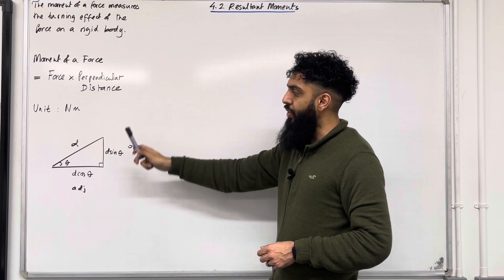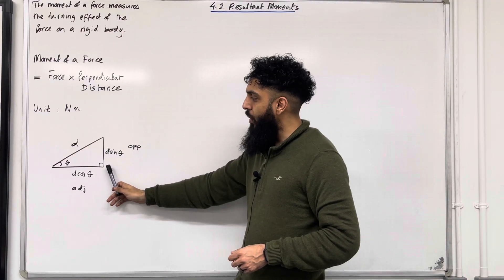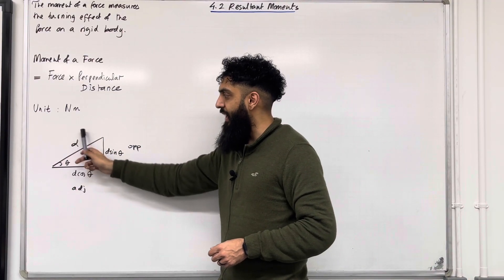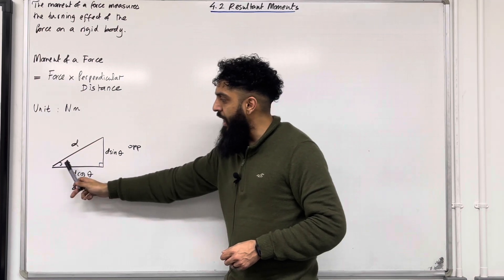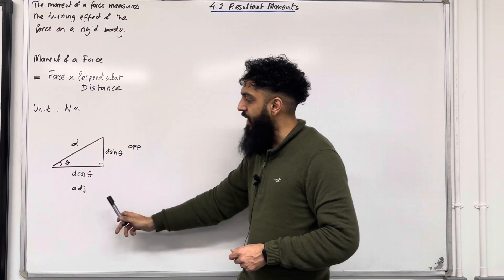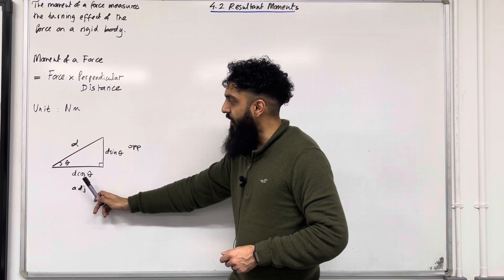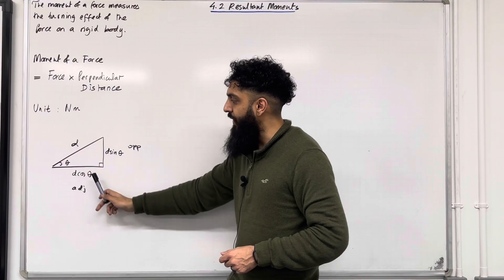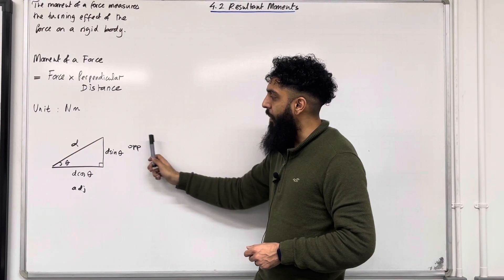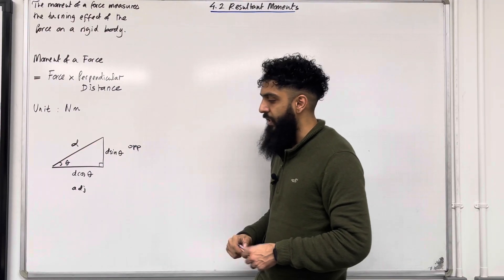Consider the following right-angle triangle. Here is the right angle, and here is the angle theta. Suppose the hypotenuse is d. The side adjacent to the right angle and angle theta is given by d cos theta. The opposite side is given by d sin theta.